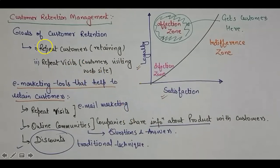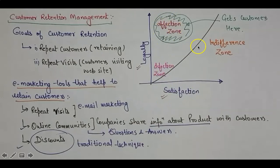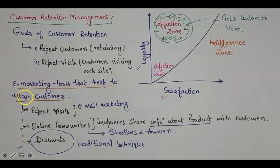In this slide we have seen what Customer Retention Management is. We covered a full graph of loyalty and satisfaction, discussed the affection zone, indifference zone, and defection zone, and finally talked about the e-marketing tools that help to retain customers.